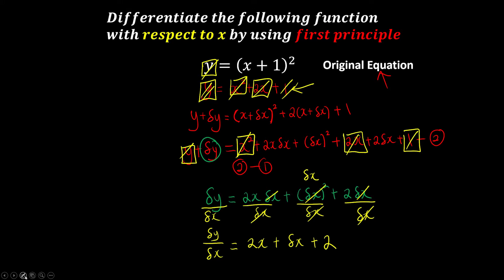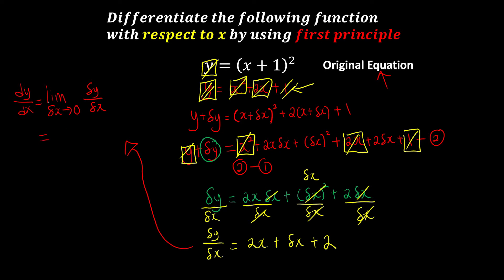As we know, delta x is not good enough — we want to use the limit. So we say the limit as delta x approaches 0 of delta y over delta x; this is eventually equivalent to our gradient of the specific point. So when delta x equals 0, we have 2x plus 0 plus 2, meaning our gradient function is 2x plus 2.